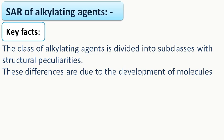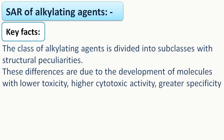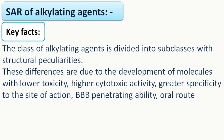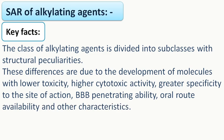These differences are due to the development of molecules. While they were developed, the scientists tried to develop better compounds than previous ones. Through this development process, compounds were developed with lower toxicity, higher cytotoxic activity for cancer cells, greater specificity to the site of action, blood-brain barrier penetrating ability, oral route availability, and other characteristics. Thus, the relationship between structure and activity of drugs changes according to the subclass.